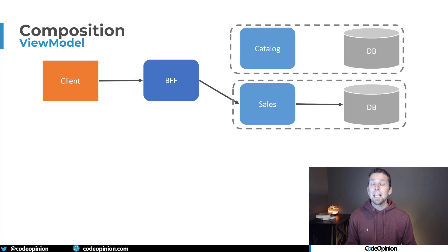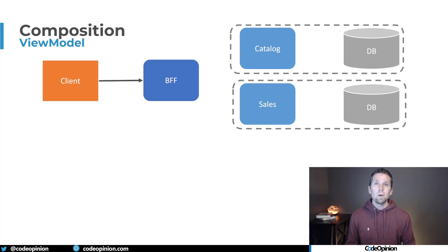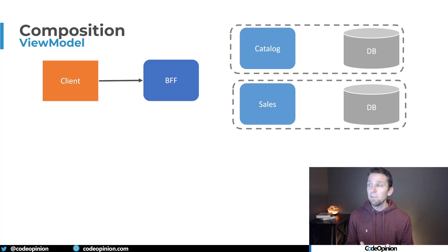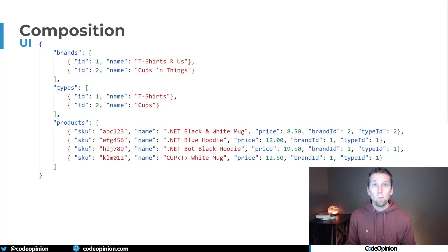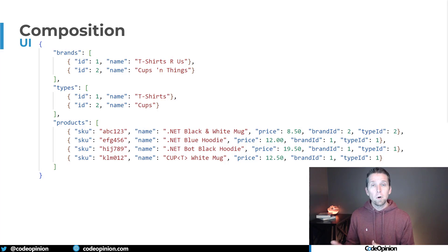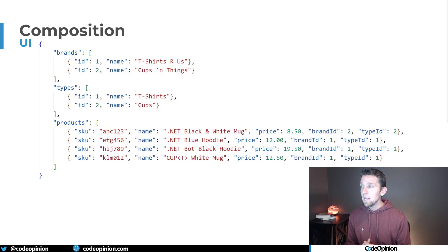it can hit the sales service, requesting all the prices for all the product IDs or SKUs, and get all that data back. Now we're doing things in batch, composing everything on our BFF, and returning all that data back to the client in a single request. Here's an example of all the data returned in that single request from the client to the BFF.